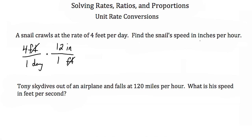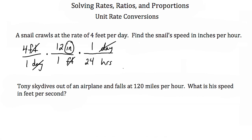We now have inches per day, but we want inches per hour. So we multiply by another ratio to convert days into hours. Because days are currently on the bottom of the fraction and we want to get rid of them, we put days on top of the conversion ratio, with hours on the bottom. We use the honest ratio of 1 day equals 24 hours. Day cross cancels, leaving us with inches over hours. Remember, when we multiply fractions, we multiply numerators by numerators and denominators by denominators.